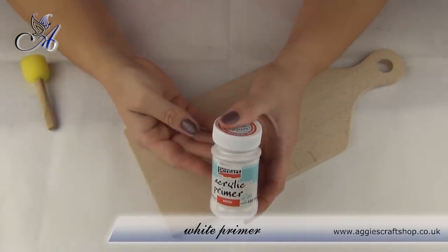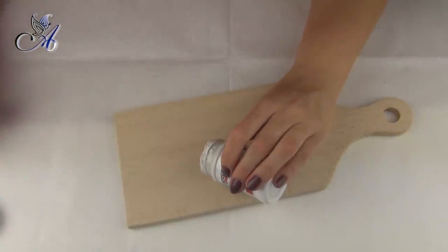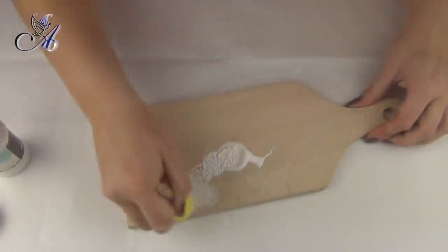First I need to paint my board with white primer. If you are using sponges as I do, one coat should be just right.